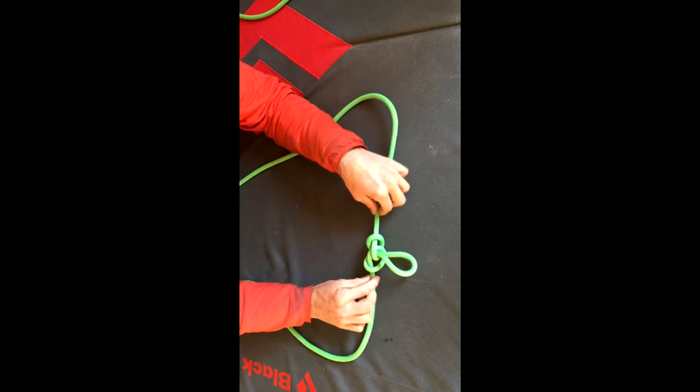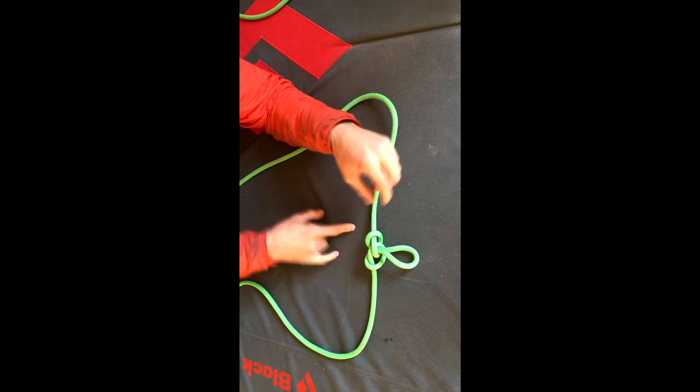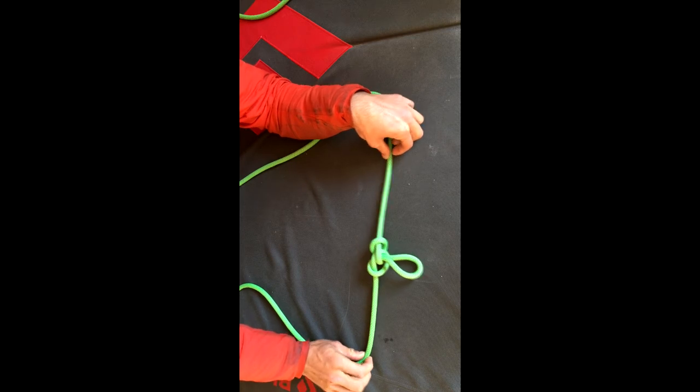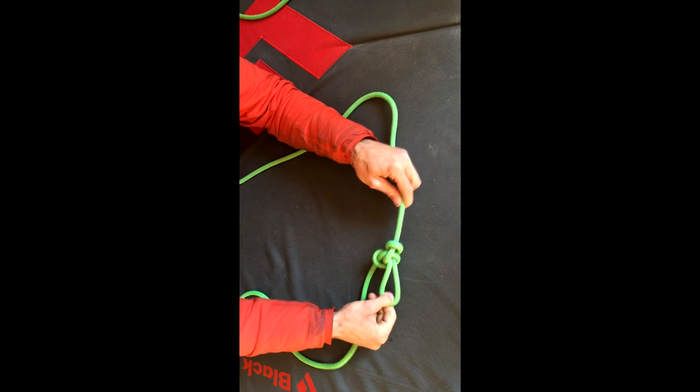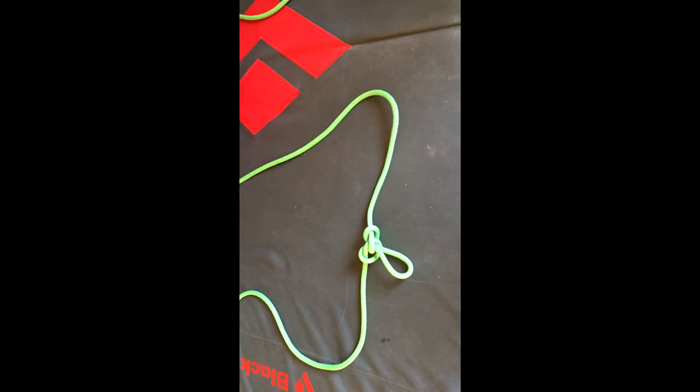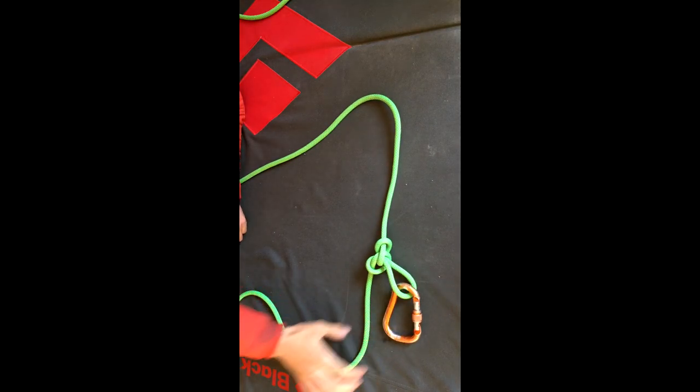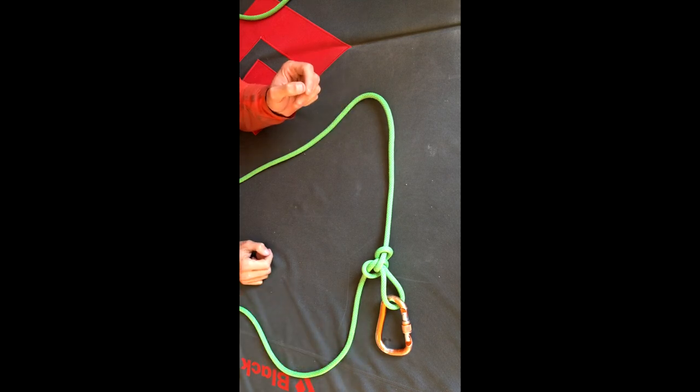Go ahead and split the legs. The alpine butterfly can be loaded in three directions - it can be loaded this way along the strands, the two strands that we have here, or in this loop here. We can connect the alpine butterfly to our harness using a locking carabiner through that loop.